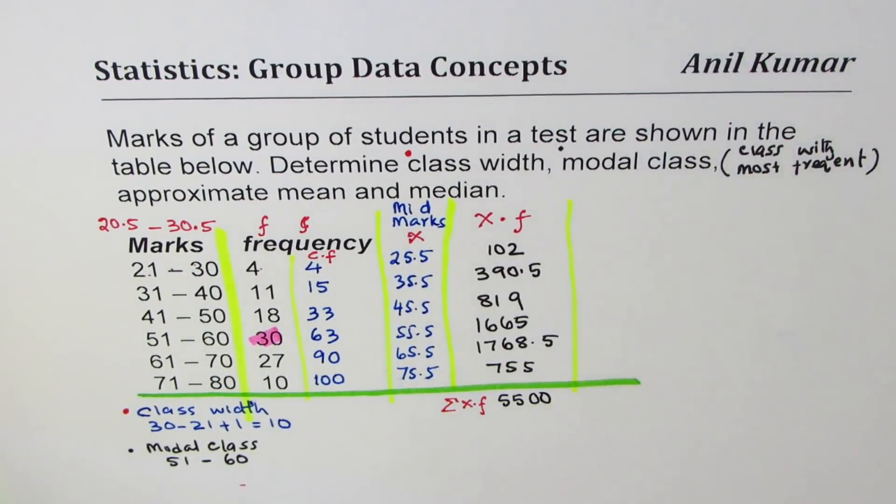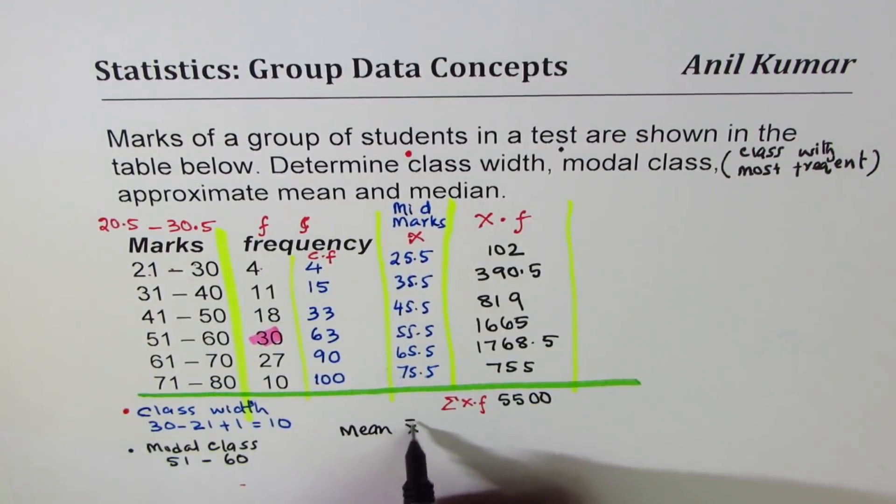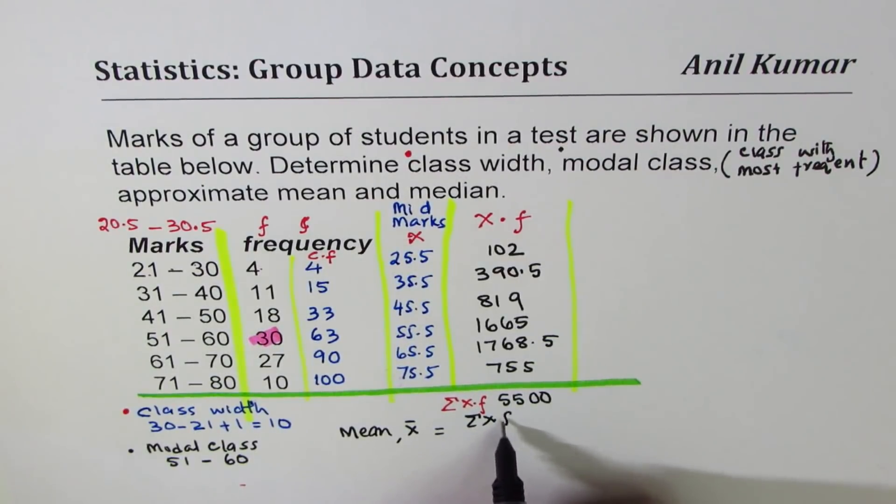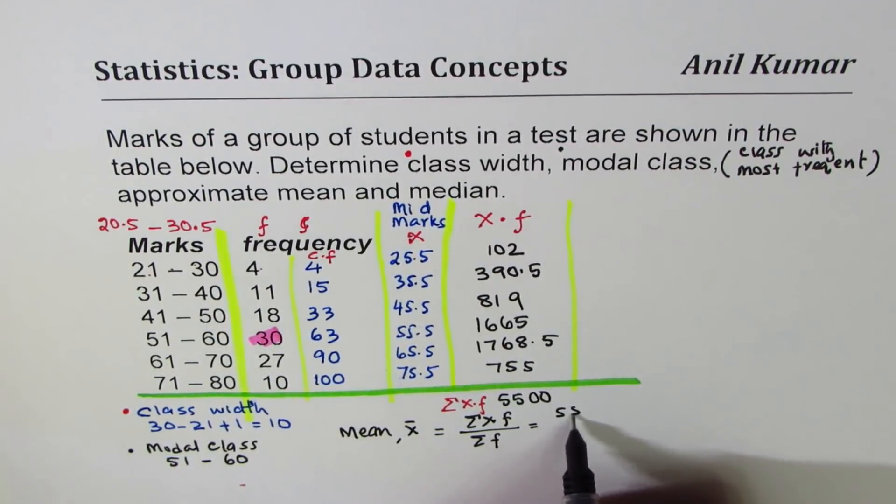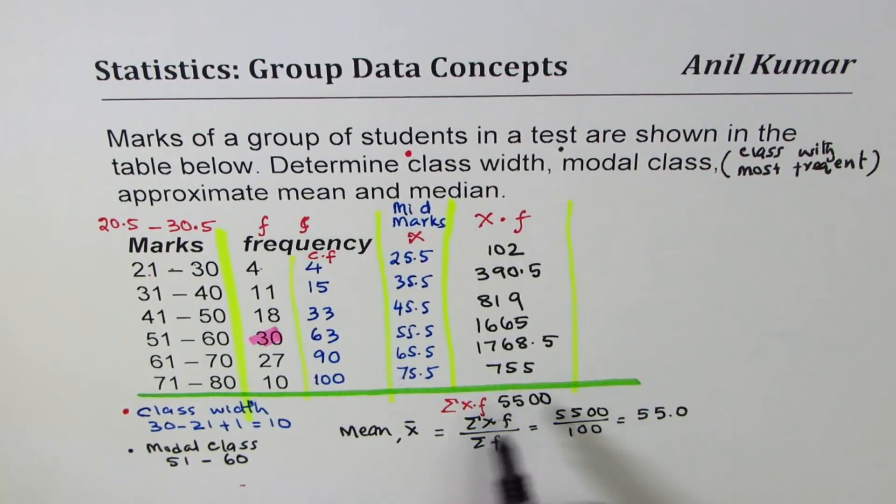Now what is the mean? Mean for us will be sigma of this product of average value times frequency divided by sum of frequencies, which is 5500 divided by 100 which is 55. It's good practice to write in one decimal place. So I prefer to write 55.0. So we've done the mean.